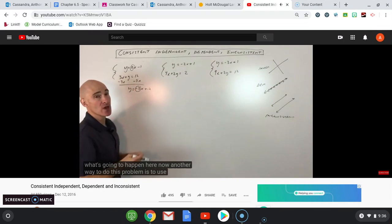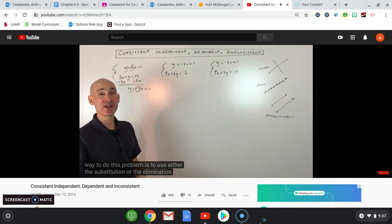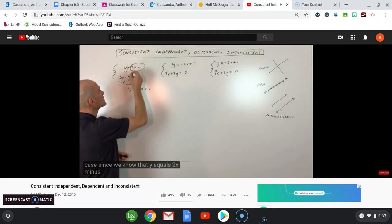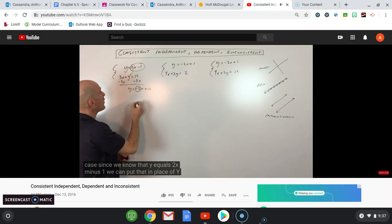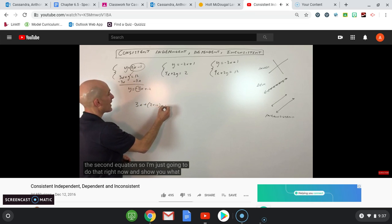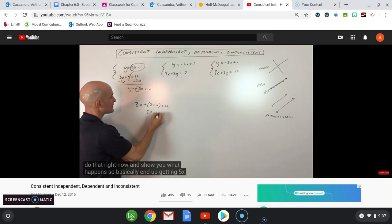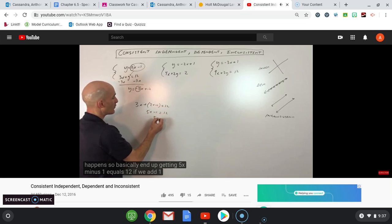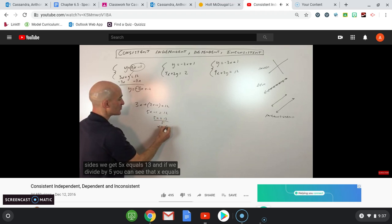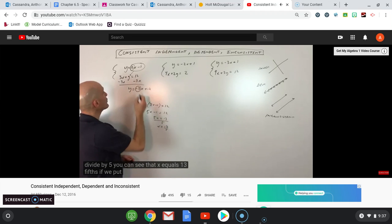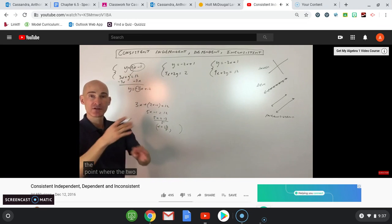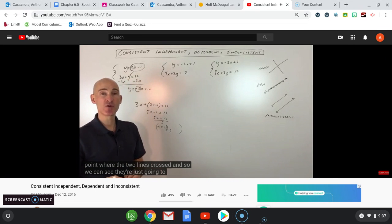Another way to do this problem is to use the substitution or elimination method. Since we know that y equals 2x minus 1, we can put that in place of y in the second equation. We end up getting 5x minus 1 equals 12. Adding one to both sides gives 5x equals 13. Dividing by 5, x equals 13 fifths. Putting 13 fifths back in for x gives the y-coordinate of the intersection point, confirming there's just one solution.